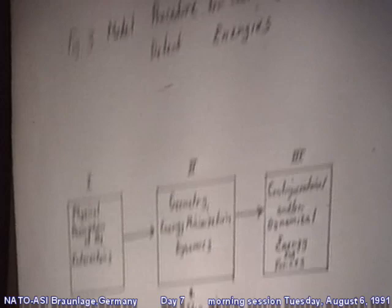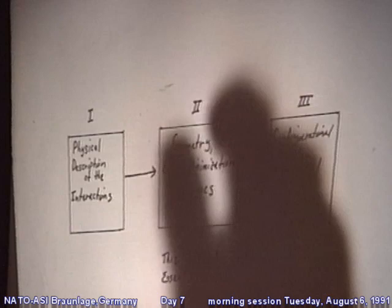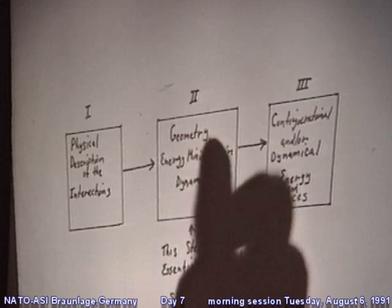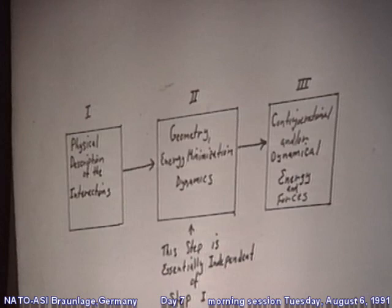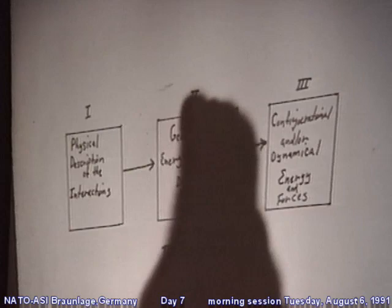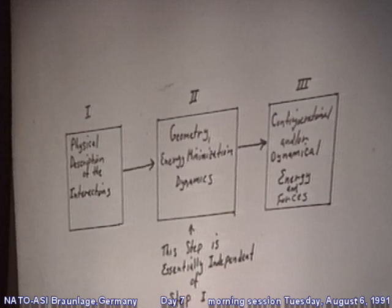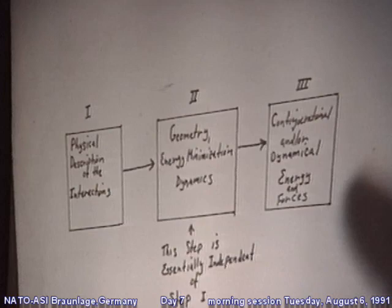Schematically, what happens is that if you're doing a fixed calculation where you have fixed geometry and just want a configurational energy, you can specify the geometry without knowing the full physical description. But generally, if you want to do dynamics, the evolution of that system feeds into the geometry problem and then you come out with some sort of configurational energies or dynamical systems.